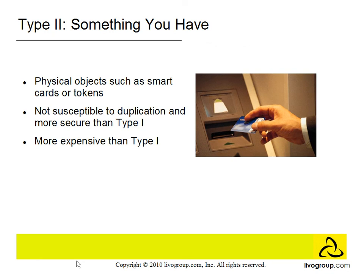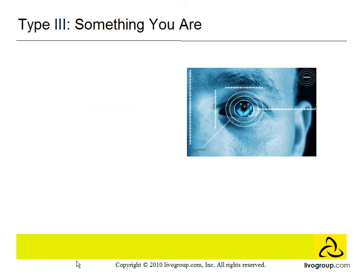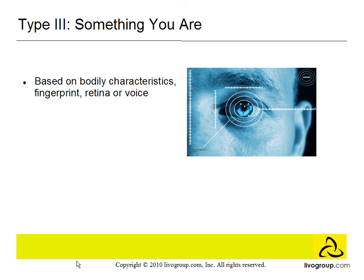Type 3 is something you are. This is based on bodily characteristics such as fingerprint, retina, or voice. Since these characteristics are unique only to you, they are very accurate. However, they are the most expensive and difficult to implement.